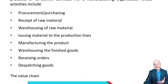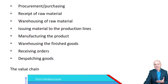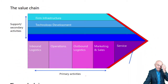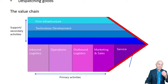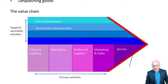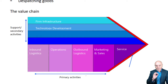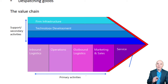A useful model is something called a value chain, which was invented by somebody called Michael Porter. What Porter drew up were all the activities carried on by a business.